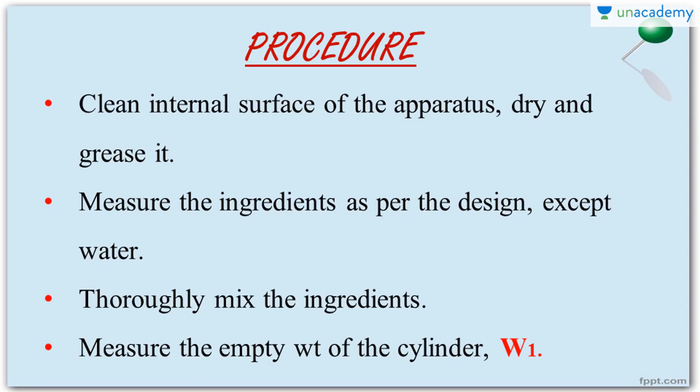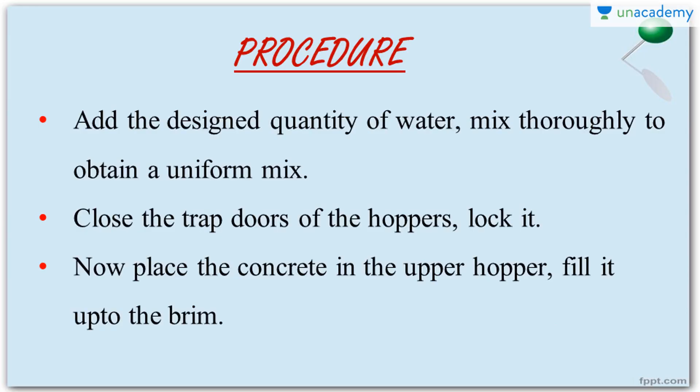First, clean the apparatus thoroughly, dry it so there is no moisture content, and grease it so concrete can slip through fast. Next, measure the ingredients as per the design — except the water, because adding water causes the concrete to set soon. Proportion all dry ingredients first, mix thoroughly for a uniform mix, and don't add water yet. Now measure the empty weight of the cylinder — let that be W1.